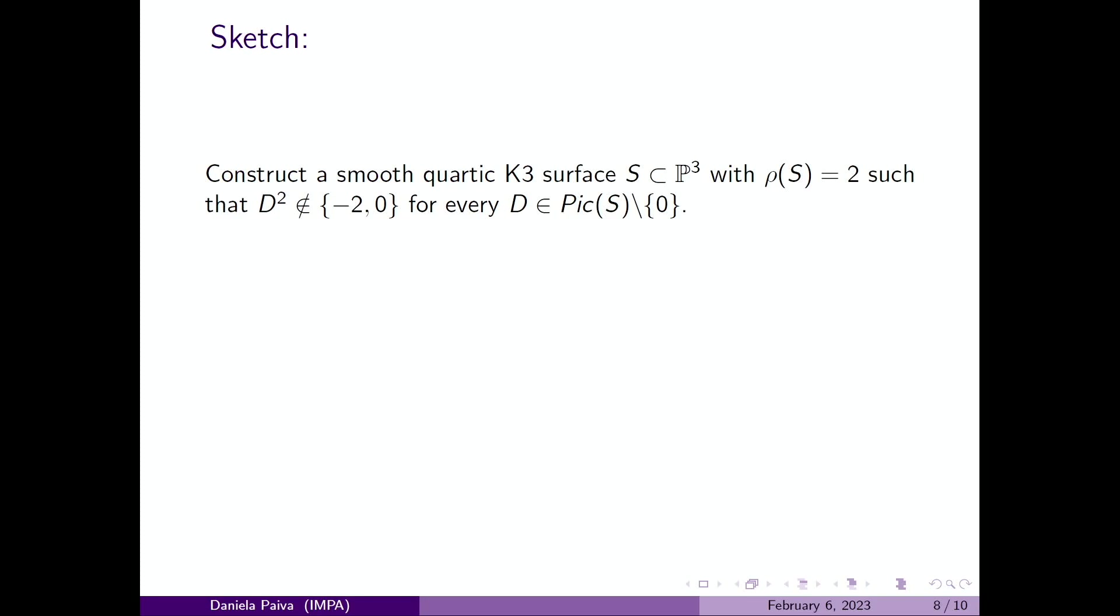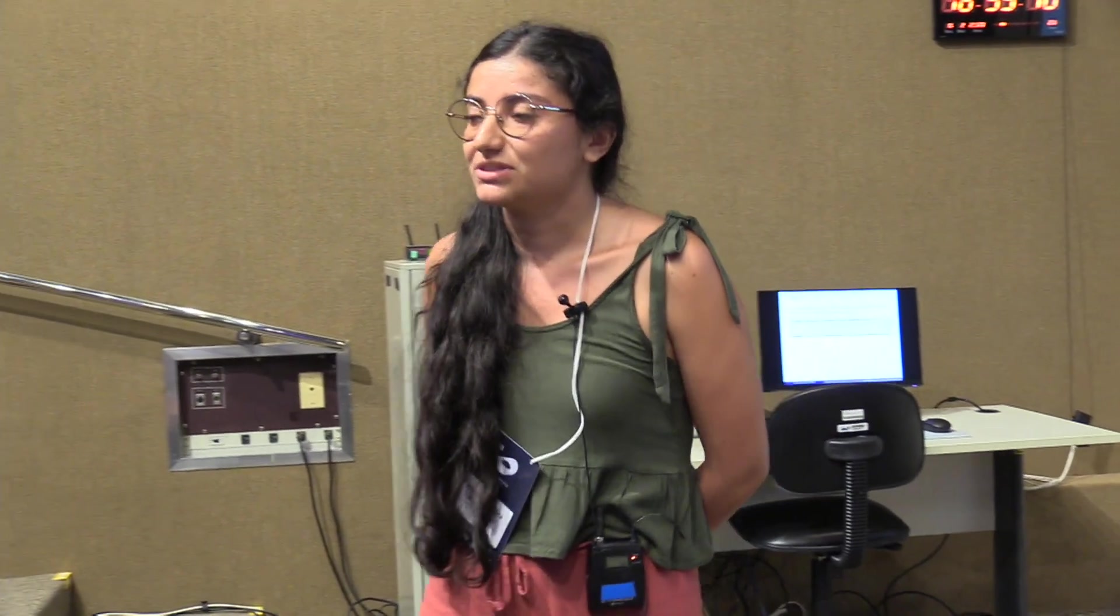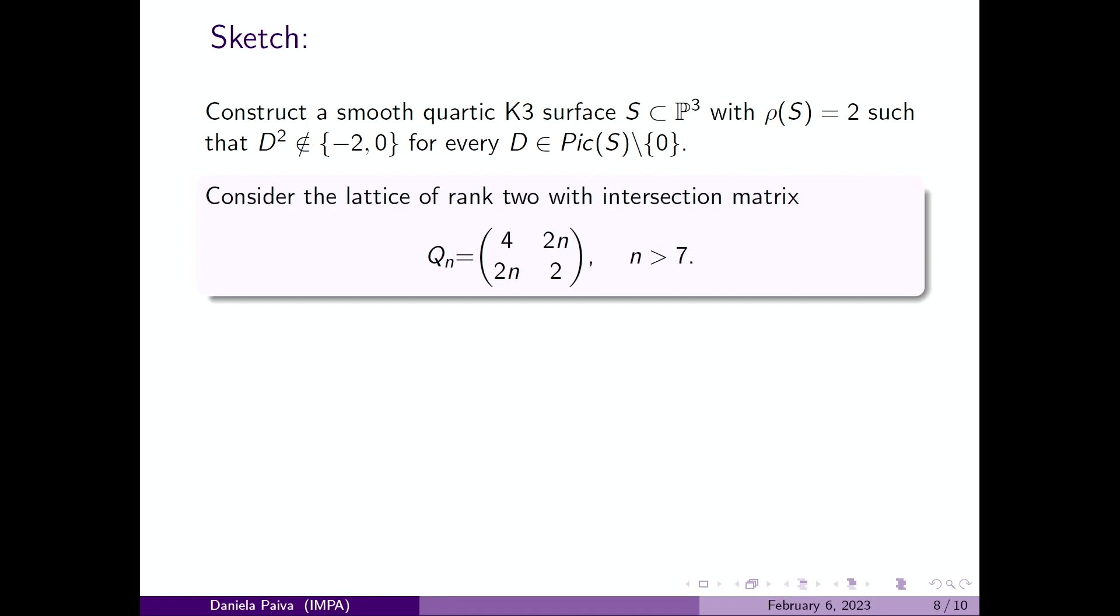The sketch of proof is this: We first construct a smooth quartic surface in P³ with Picard number two such that the Picard lattice contains no non-trivial elements with self-intersection -2, -2, or 0. For that, we consider this lattice of rank two where the intersection matrix is given by this matrix Q_n, and n is greater than seven. This lattice is an even lattice with signature (1,1), so there exists a K3 surface. The element of the Picard lattice is this lattice. But in principle it's just a K3 surface.